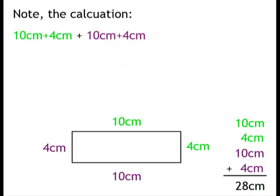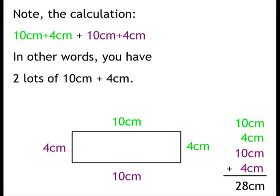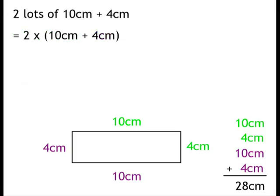I'm going to have another look at that calculation that we just did. I've noticed that we did 10 plus 4cm for those two green sides, and 10 plus 4cm for those two purple sides. In other words, I had 2 lots of 10 plus 4cm. So a quicker way of doing this calculation would be 2 lots of 10 plus 4cm.